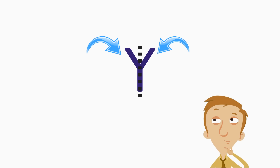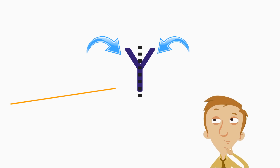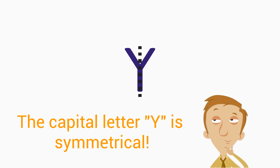We know it's a line of symmetry because we look at both sides to see if they match. Both sides match each other. When the two sides match, that tells us the capital letter Y is symmetrical. It has symmetry.